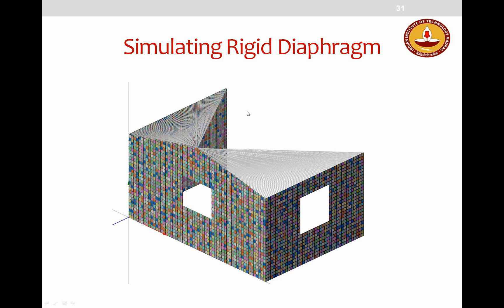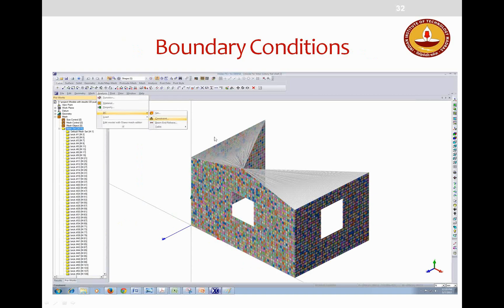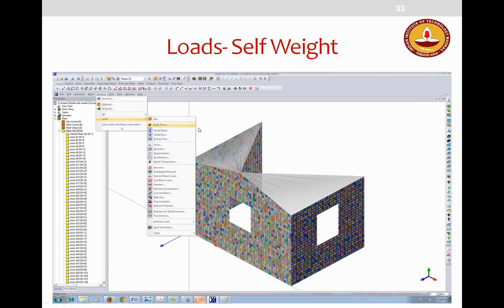Once diaphragm constraints, meshing, and modeling are complete, boundary conditions are assigned via 'Analysis > Boundary Condition > Constraint.' A fixed boundary condition is applied at the base, constraining all degrees of freedom. Self-weight is applied using 'Analysis > Load > Body Force,' specifying acceleration due to gravity in the negative y-direction as −9810 (Newton and mm units).